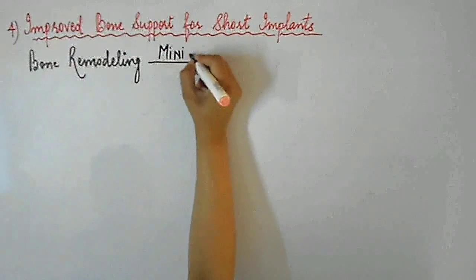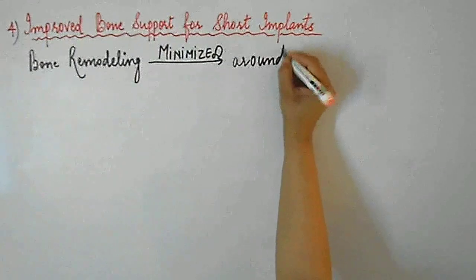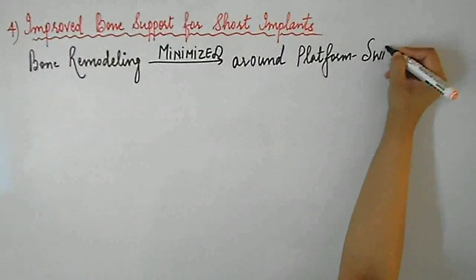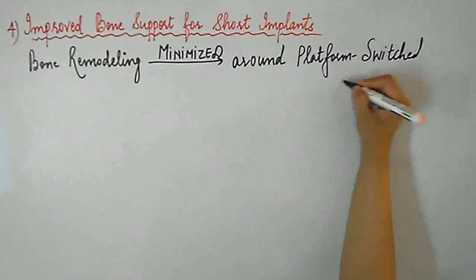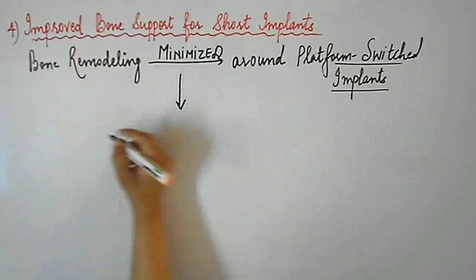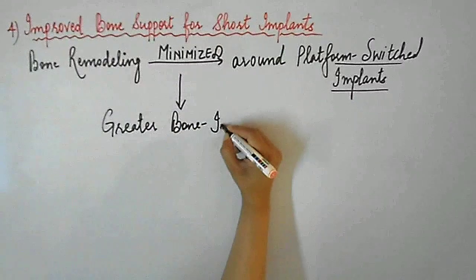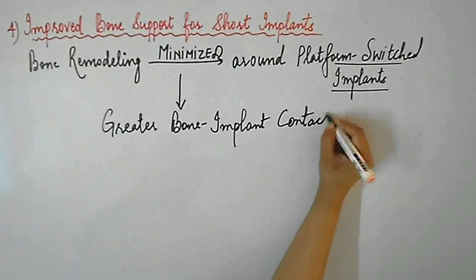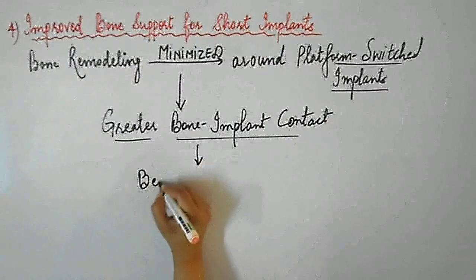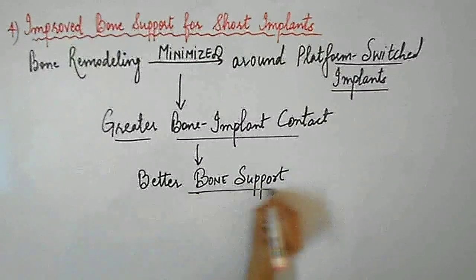Another clinical benefit of platform switching is that it provides improved bone support for short implants. Bone remodeling is minimized around platform-switched implants; therefore there is greater bone-implant contact for shorter implants, hence providing better bone support for short implants.